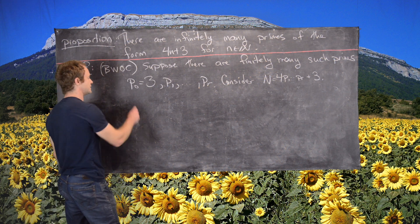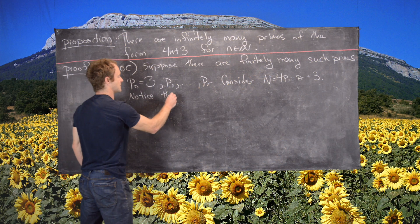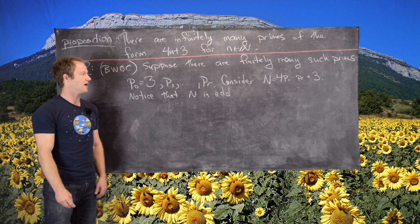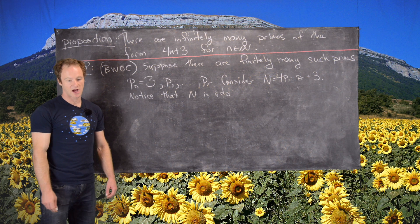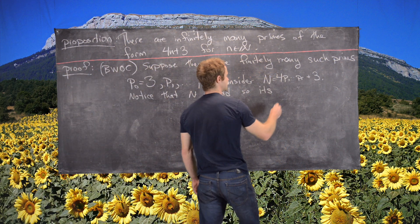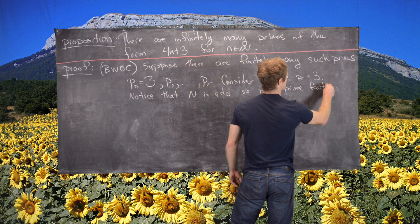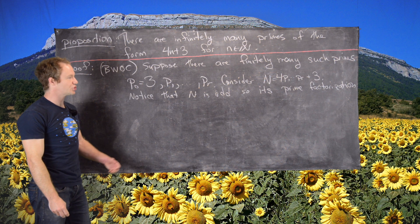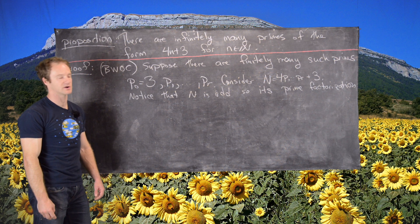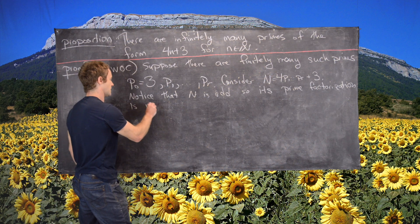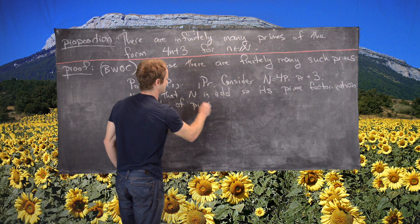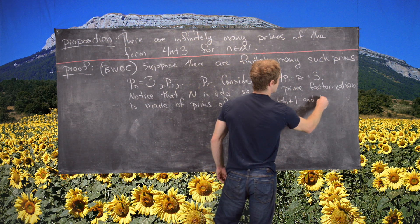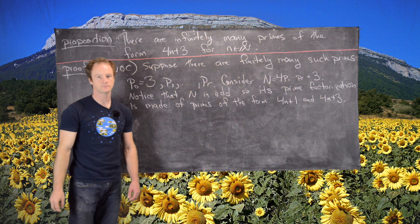Now let's notice that n is odd. It's of the form 4 times a number plus 3, so that's an odd number. So its prime factorization must be made exclusively of odd numbers. So 2 is not part of its prime factorization. In other words, its prime factorization is made of primes of the form 4n plus 1 and 4n plus 3.